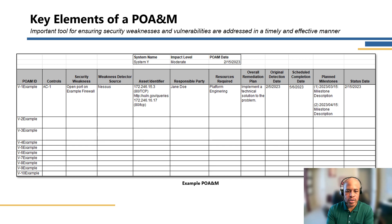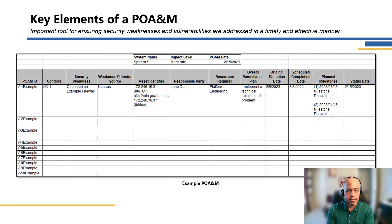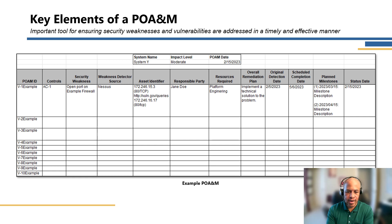Some of the key elements include knowing what system we're aligning against. Dates are very important for keeping the POAM updated. Regarding POAM IDs: a POAM holistically is a representation of the weaknesses within the system, and within a POAM you have POAM IDs, which are specific IDs to track against the defined weaknesses.